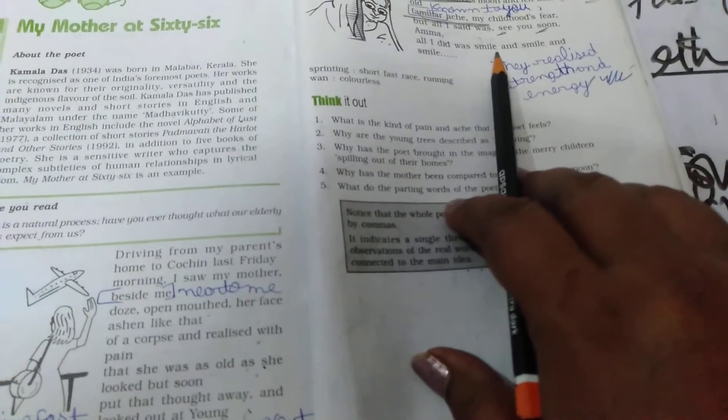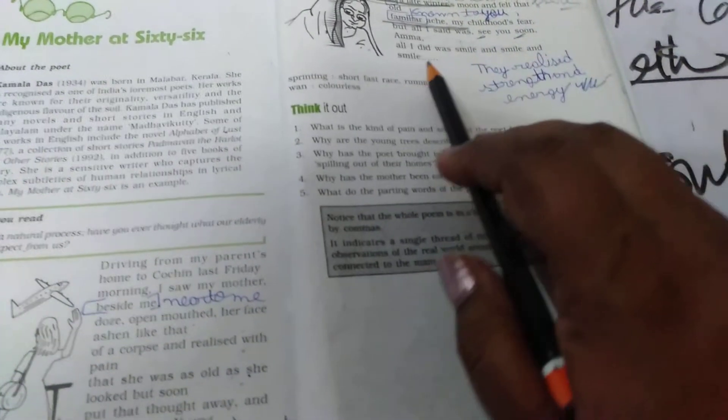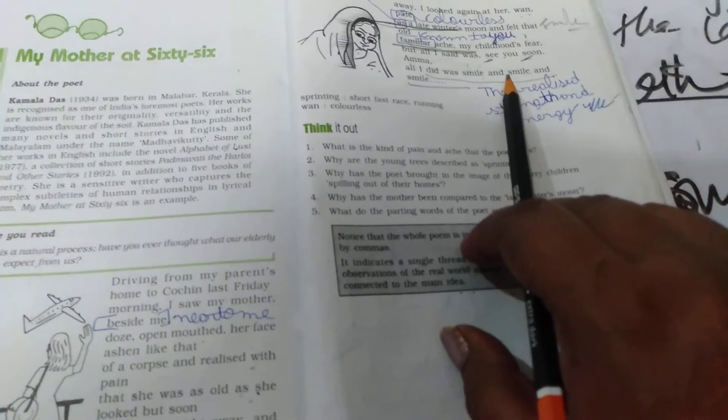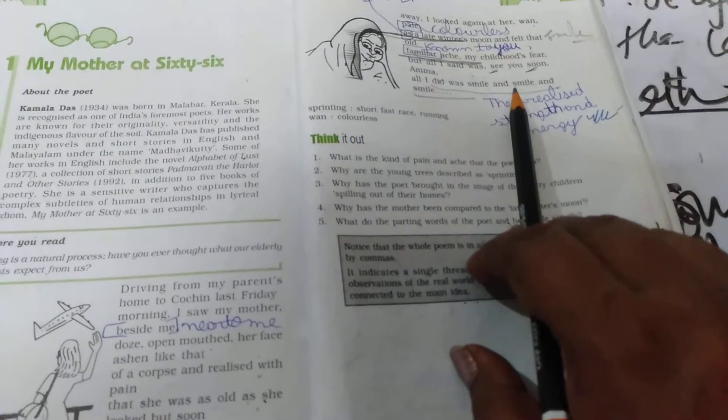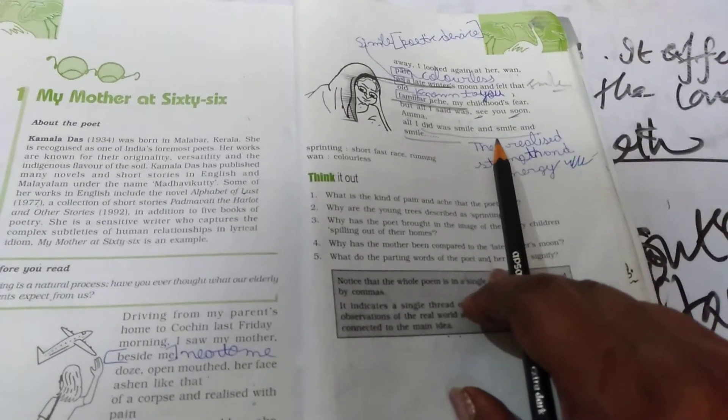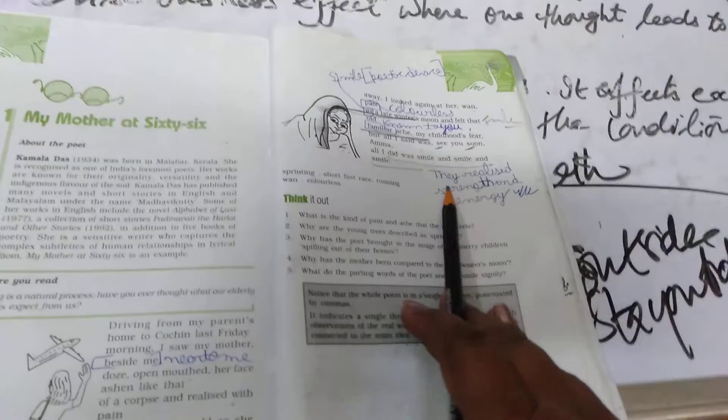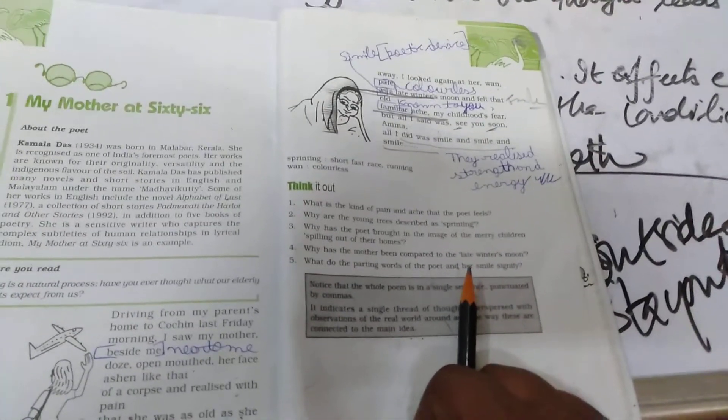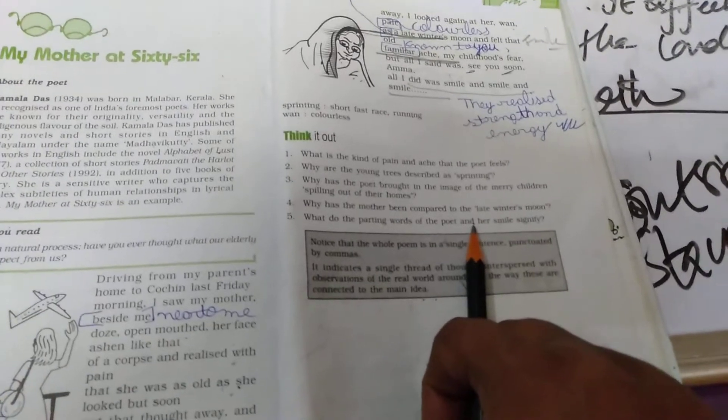Said, all I did was smile and smile and smile. This repetition shows that she has accepted it and she wants to depart on a very happy note from the mother that very soon she will see her mother again. But she knows because she is bound to attend to her duties. So she is to go but in the heart of heart she knows that her mother is very close to death.